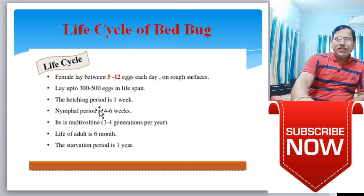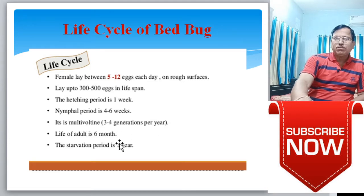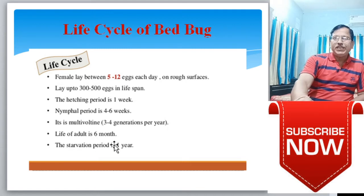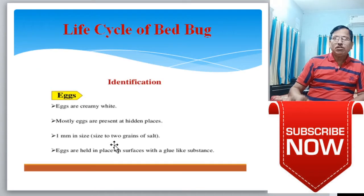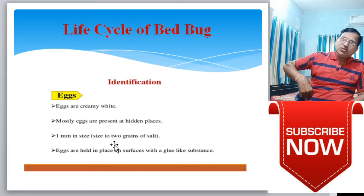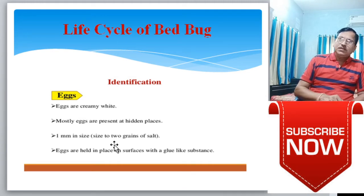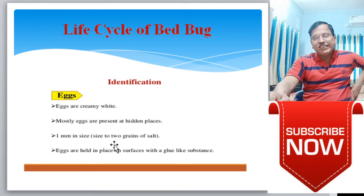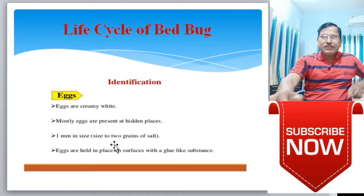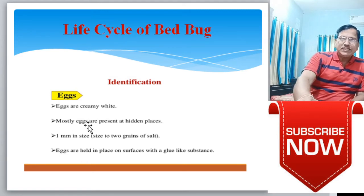The hatching period is one week. The nymphal period is four to six weeks. It is multivoltine with three to four generations per year. The lifespan of adults is six months. The starvation period is one year. These are characteristic features of the life cycle stages of the bed bug. The life cycle is completed in three stages: eggs, nymph, and adult.